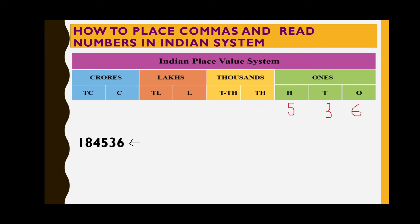Next: four in thousands, four in ten thousands, eight in lakhs, and one in ten lakhs. So we have written the number 1,84,536 according to the place values. Before reading the number, let us identify the periods.